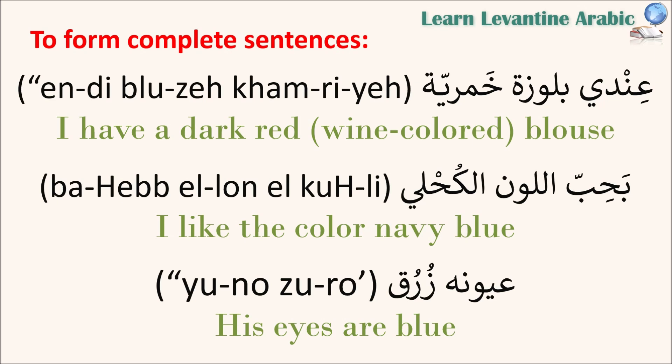بحب اللون الكحلي — I like the color navy blue. بحب means I like or I love, اللون means the color, and الكحلي means the dark blue or navy blue. عيونه زرق — his eyes are blue. عيون means eyes, عيونه means his eyes, and زرق means blue. عيونه is considered a definite noun because we know which eyes we're talking about.